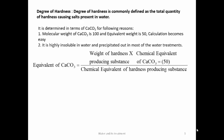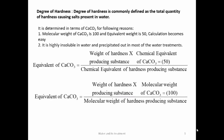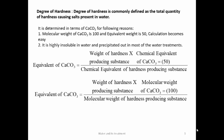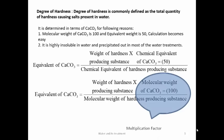The other formula commonly used in numericals is: weight of hardness-producing substance × molecular weight of CaCO₃ (100) ÷ molecular weight of the hardness-producing substance. The ratio of molecular weight of CaCO₃ to molecular weight of the hardness-producing substance is called the multiplication factor.